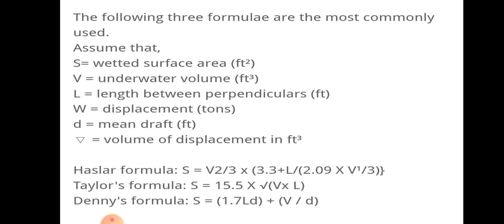Hassler's rule: S = V^(2/3) × (3.3 + L / (2.09 × V^(1/3))). Tyrell's formula: S = 15.5 × √(V × L). Denny's formula: S = 1.7 × L × D + V / D. These are some of the formulas used to find wetted surface area: Hassler's formula, Tyrell's formula, and Denny's formula.